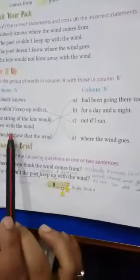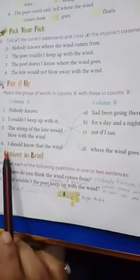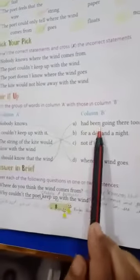Question number 3. The string of the kite would blow with the wind. Match B. Question number 4. I should know what the wind. Match A.